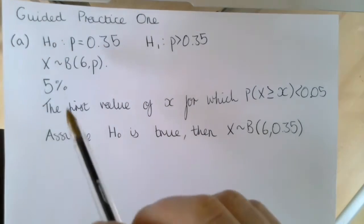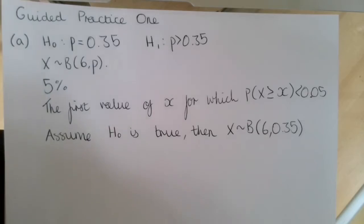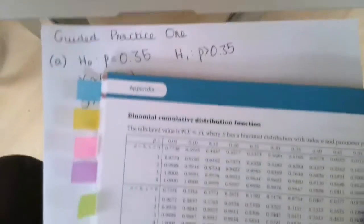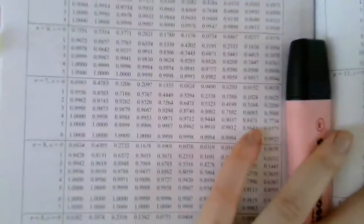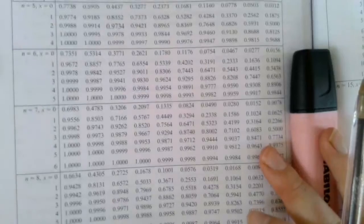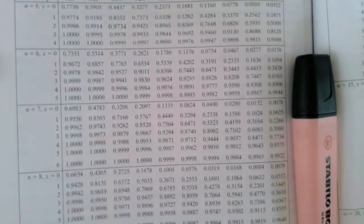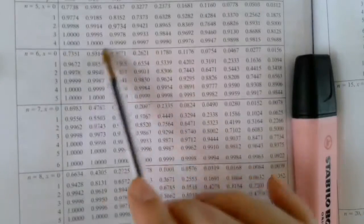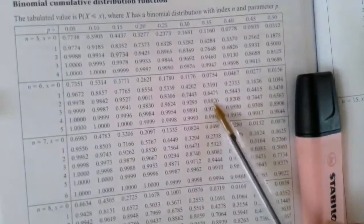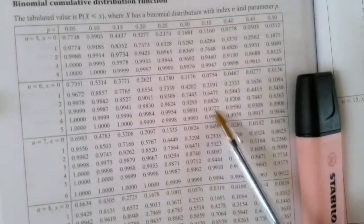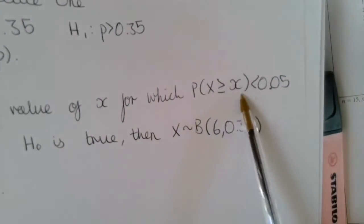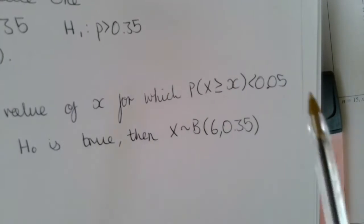So we're going to look at our tables for where n is equal to 6, and we're going to find the first value of x for which the probability that x is greater than or equal to that value is less than 0.05. If we look at n equals 6 and p equals 0.35, we're looking at the values in this column here. We want to find the value of x for which the probability that x is greater than or equal to little x is less than 0.05.